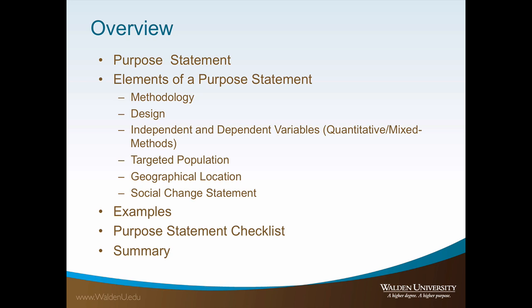These elements are the methodology, the design, the independent and dependent variables for quantitative and mixed method studies only, the population and justification for targeting this population, the geographical location, and the social change implications. Examples of quantitative and qualitative purpose statements will then be examined and a helpful checklist will be provided.